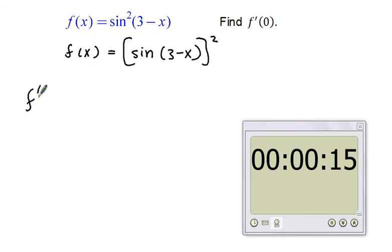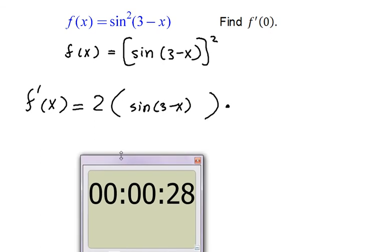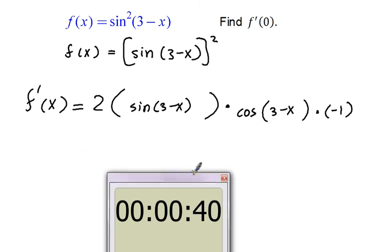So formula for f prime of x. Looking at the squaring function, I'm going to do two times the input, the input being the sine of three minus x. Next, I'm looking at the sine function, the derivative being the cosine at that input. Input is three minus x. Lastly, the derivative of three minus x is negative one.